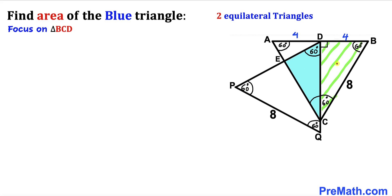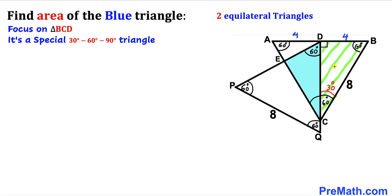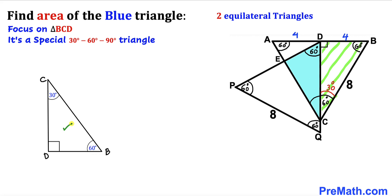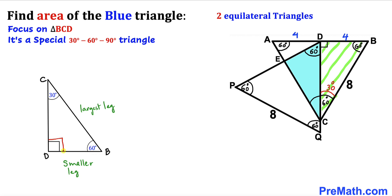Let's focus on triangle BCD. We know this is a right triangle since we have a 90 degree angle and a 60 degree angle, so therefore the remaining angle has to be 30 degrees. Triangle BCD is a special 30-60-90 triangle. The side opposite the 30 degree angle is the smallest leg, and the side opposite the 90 degree angle is the largest leg, which is twice the smallest leg.